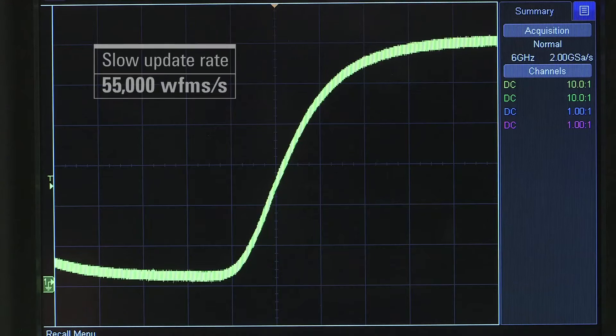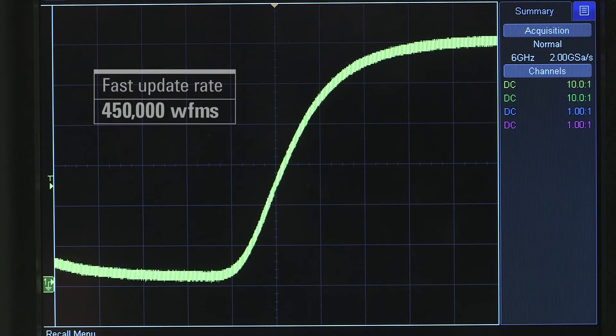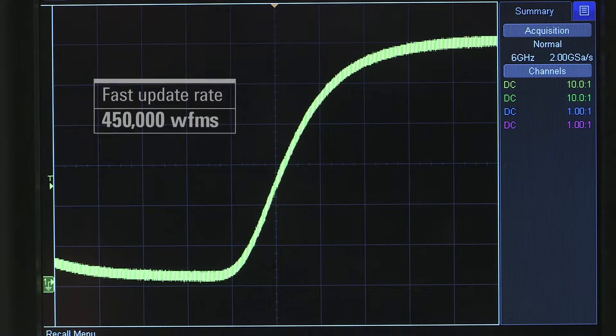With a 450,000 waveforms per second update rate, you'll be able to see all the signals and visualize even infrequent anomalies. If you can't see the problem, you can't fix the problem.